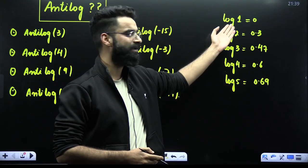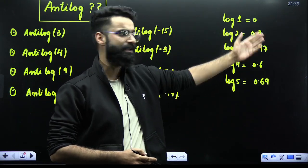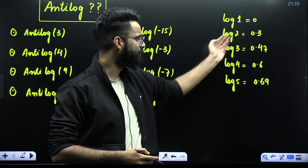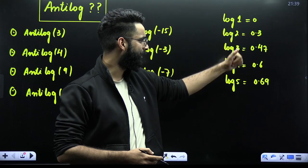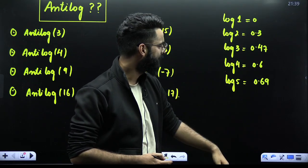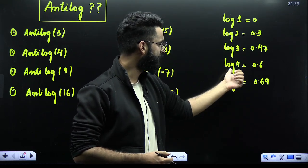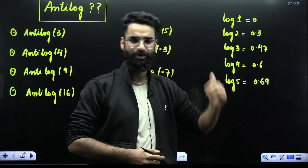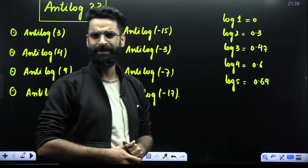Log of 1 to the base 10 is 0. Log of 2 to the base 10 is 0.3. Log 3 is 0.47. Log 4 is 0.6. Log 5 is 0.69.